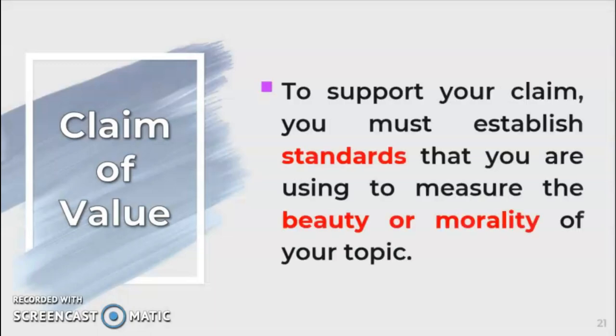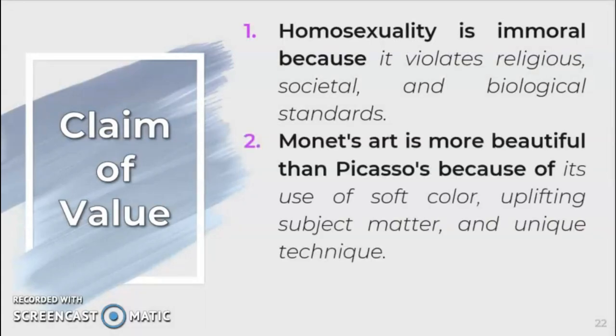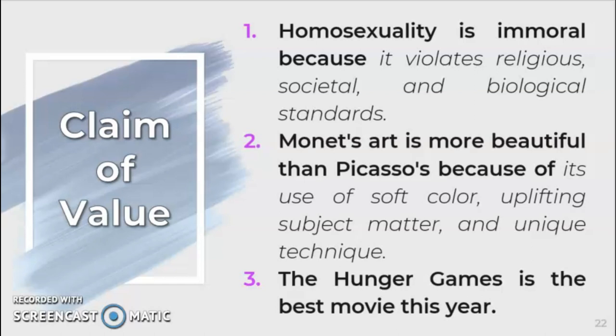In order to support your claim of value, you must establish standards that you are using to measure the beauty or morality of your topic. You have to use examples to clarify abstract values and use credible authorities for support. Let's take a look at the given examples. The claim attempts to prove the badness of one idea based on a moral judgment as specified by various standards — it may be religious or even political. The third example is a judgment comparing and contrasting movies, assigning a value of good or bad. Critical readers must look for supporting factual statements and ask by whose standard something is good or bad, superior or inferior, before allowing themselves to be swayed by claims of value.